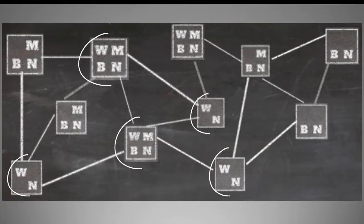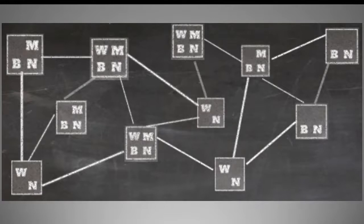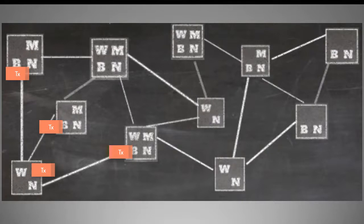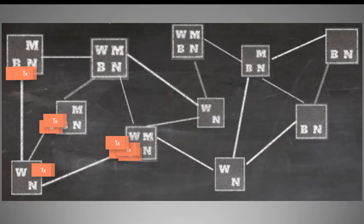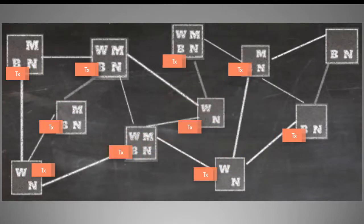Transactions are created by wallets when the owner of Bitcoin transfers Bitcoin to the next owner. The wallet node that created the transaction sends it to its connecting nodes. These nodes perform their own independent verification, and if they find the transaction to be valid, they forward a copy to their own connecting nodes. This process continues until all nodes receive the transaction. If a node finds the transaction invalid, it rejects it and does not propagate it further.